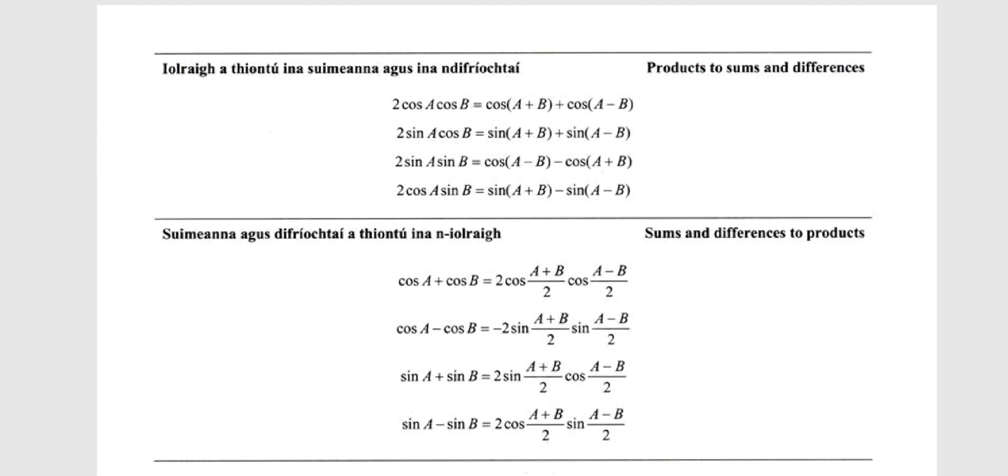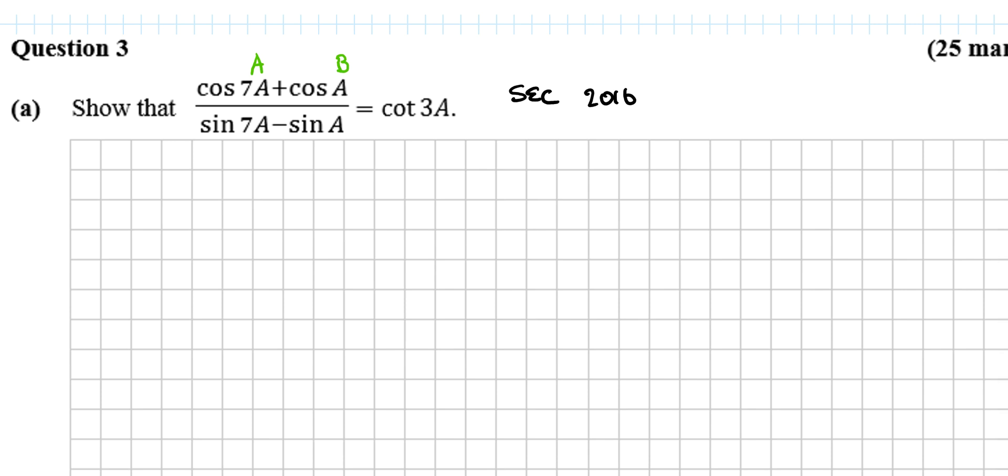So this was our 7a, this was our a and what do we end up with? We end up with 2 cos, it would be 7a plus a over 2 cos 7a minus a over 2. So what's that look like? 2 cos 7a plus a over 2 cos 7a minus a over 2.